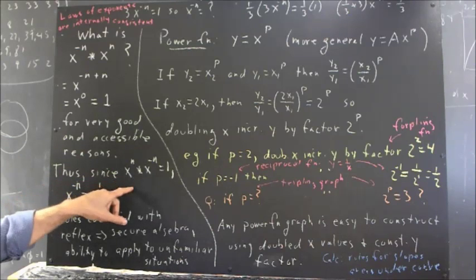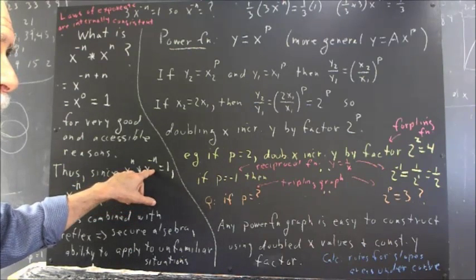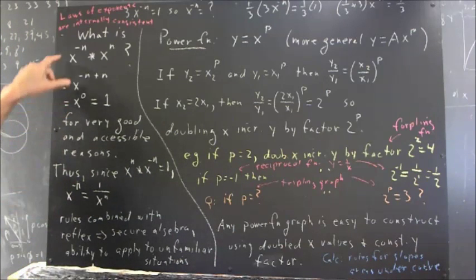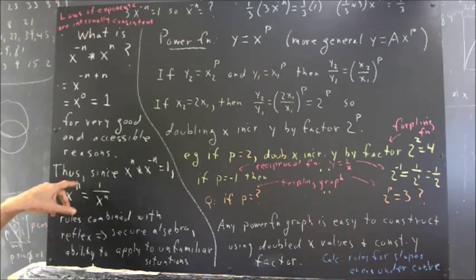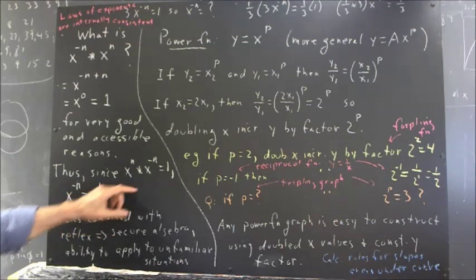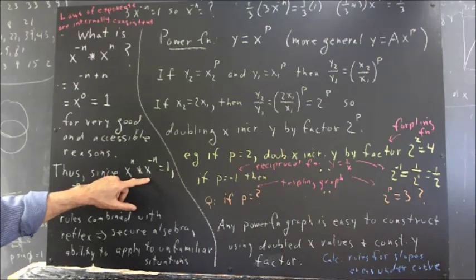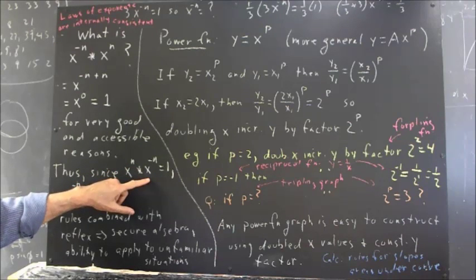Since x to the n multiplied by x to the negative n is one, as we see here, then x to the negative n... how do you solve this equation for x to the negative n? Again, nobody knew. Nobody could answer this question.